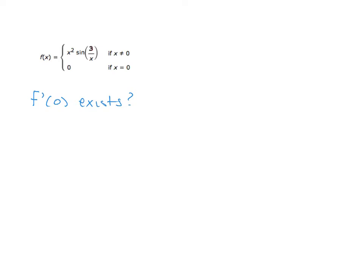To figure that out, we can use the limit definition of the derivative. We can use either one we want, but f prime of 0 is equal to the limit as h goes to 0 of f of 0 plus h minus f of 0 over h.